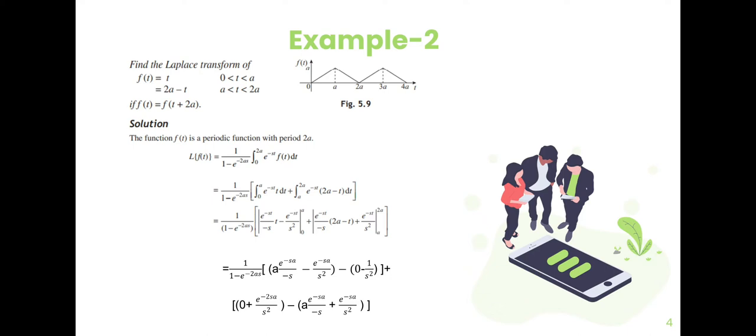Find the Laplace transform of f(t), where f(t) equals t for 0 ≤ t ≤ a, and equals 2a minus t for a ≤ t ≤ 2a. The period is 2a.